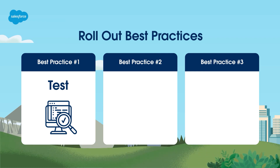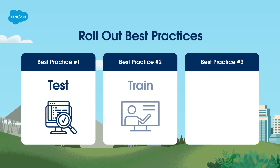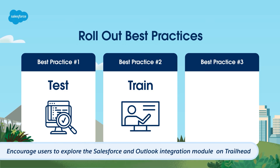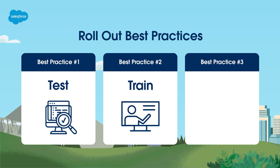Best Practice Number 2: Train. Conduct hands-on trainings in pilot users' own environments using real-life, relevant workflow examples. Then encourage users to explore the Salesforce and Outlook integration module on Trailhead to learn even more. You can even gamify your trainings and reward active users with company swag or recognition in Slack.